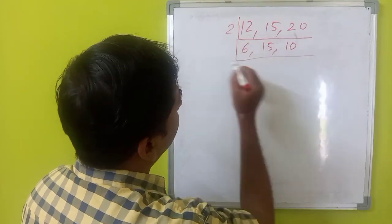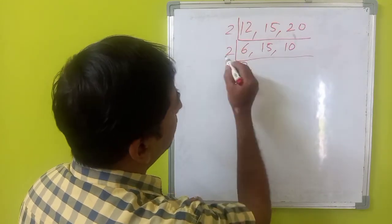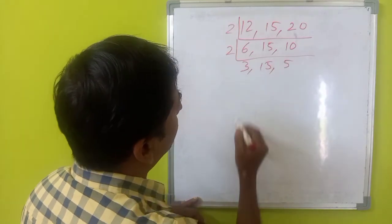Now, we can go with 2 again. 6 is divisible and 15 is not divisible. We will write it as this. 10 is divisible. We can write it like this.